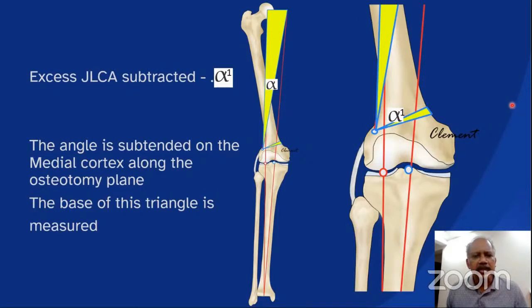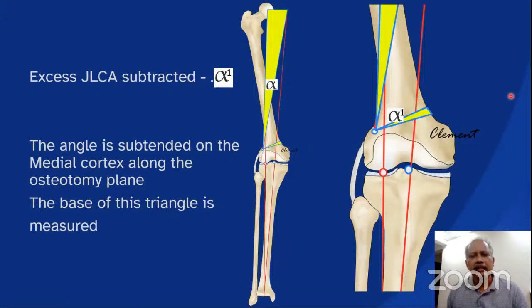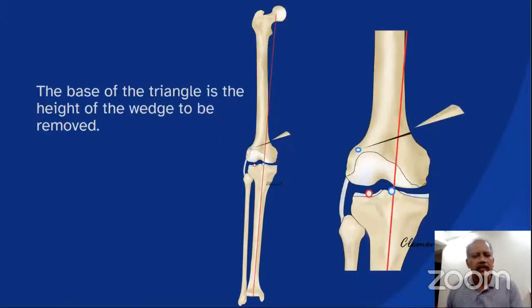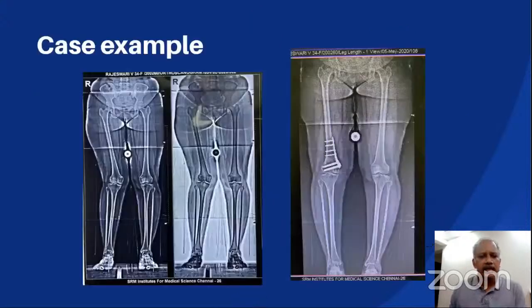The weight-bearing line is projected the same length to end at point C, which corresponds to the new position of the femoral head after osteotomy. Point C is connected to the hinge point, forming a triangle. The angle at the hinge point is the angle of correction. Any excess JLCA indicating a soft tissue deformity component should be subtracted from this angle, and the resulting angle is subtended on the medial cortex along the osteotomy plane.